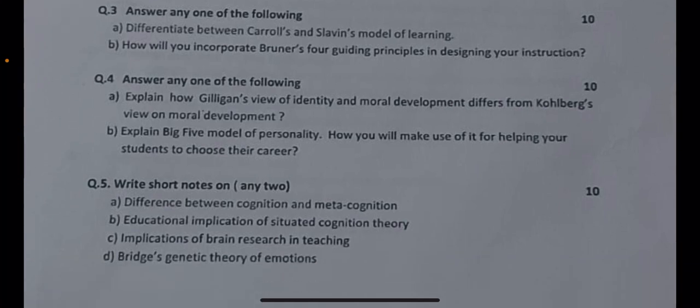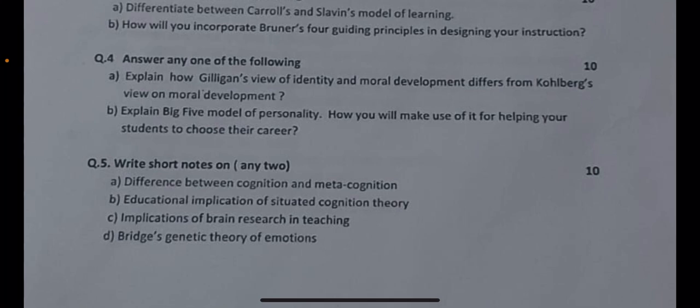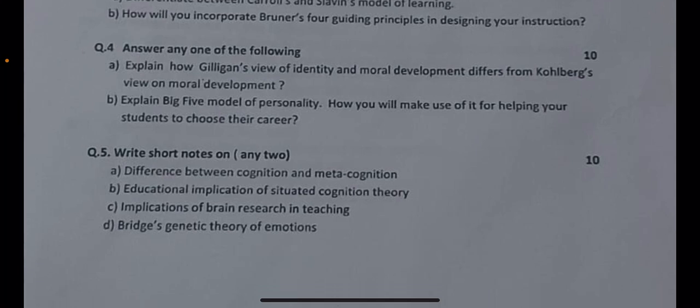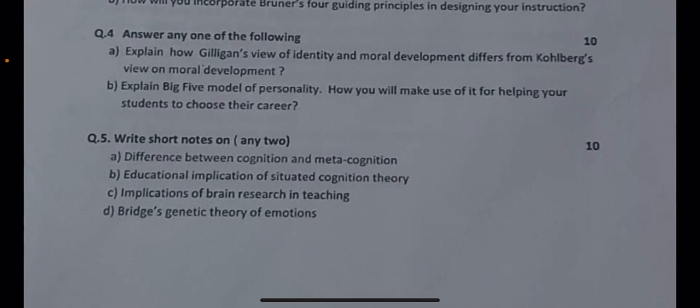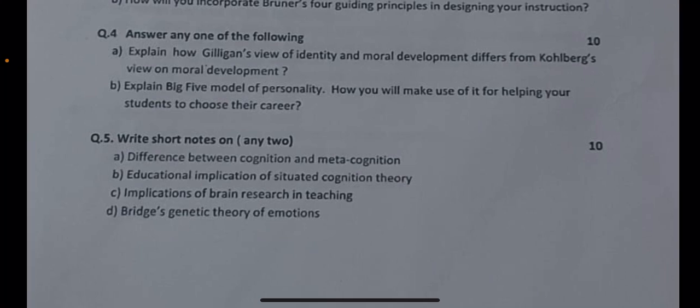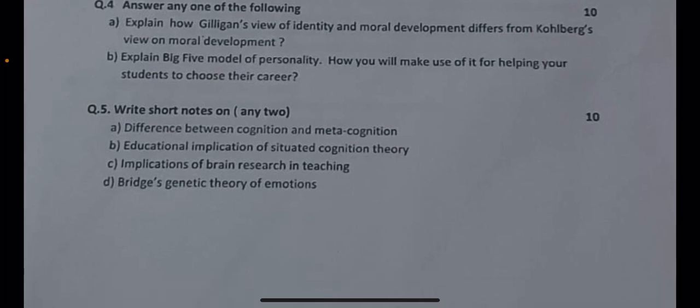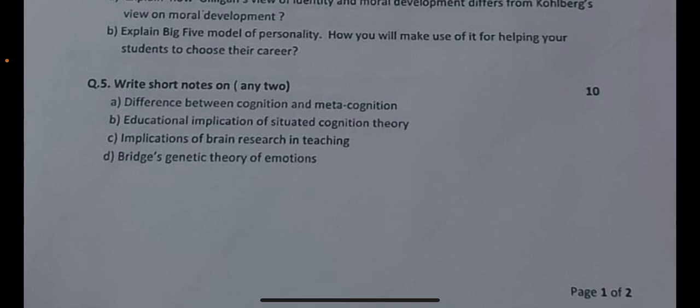Question number four: answer any one of the following. Part A: explain how Gilligan's views of identity and moral development differ from Kohlberg's view of moral development theory. Part B: explain the Big Five model of personality — how will you make use of it for helping students choose their particular careers?